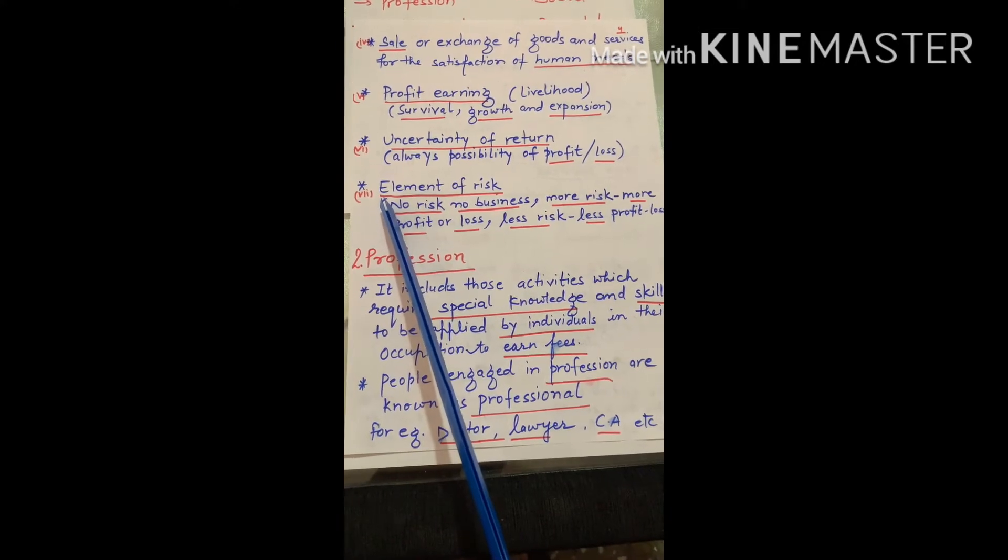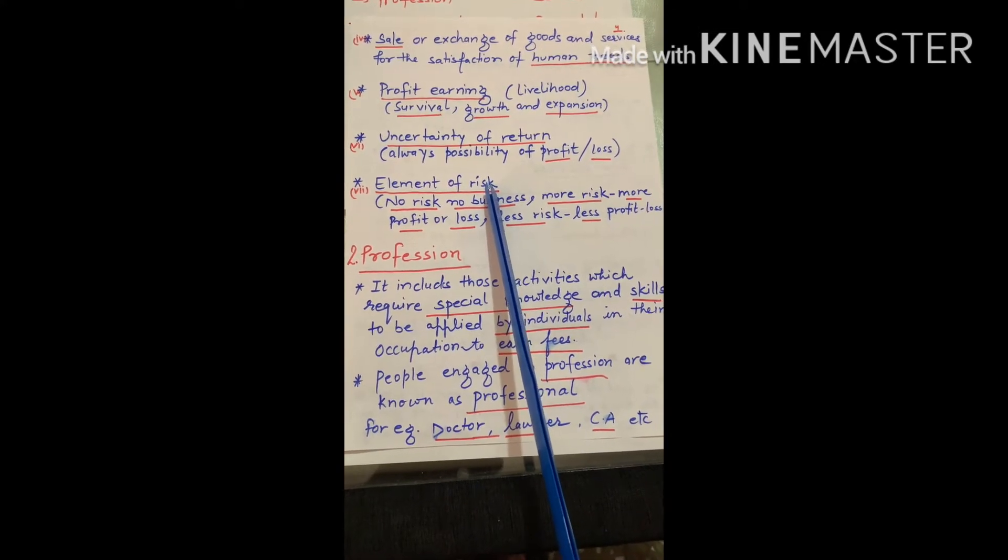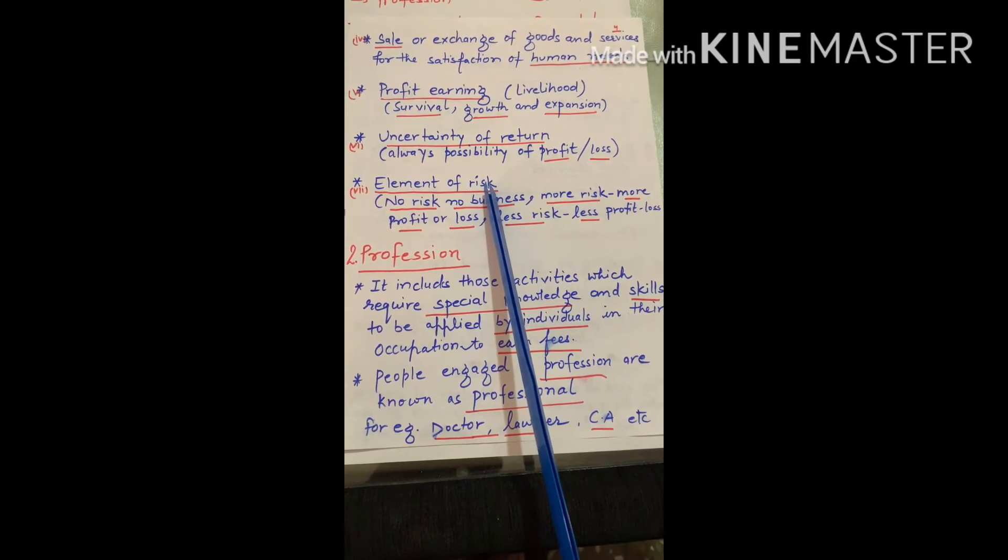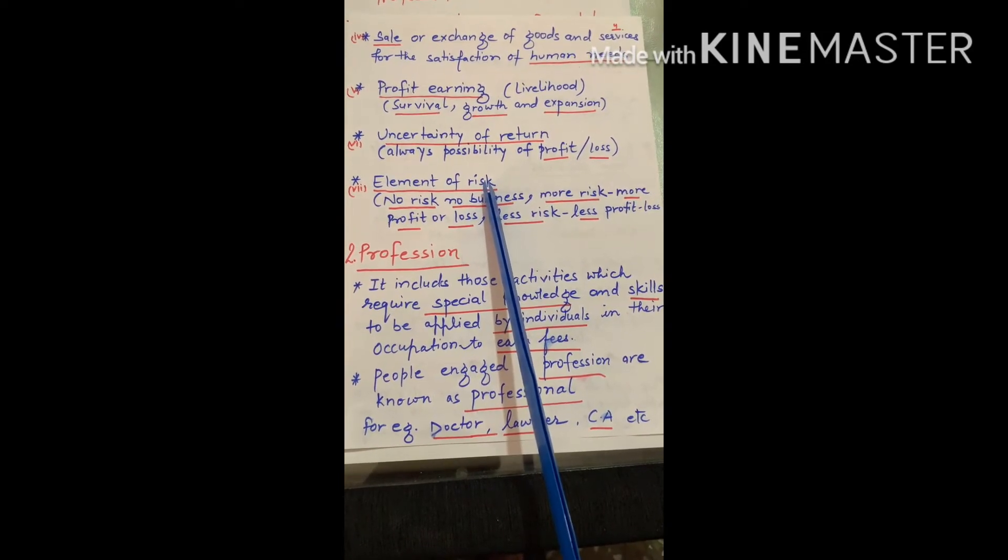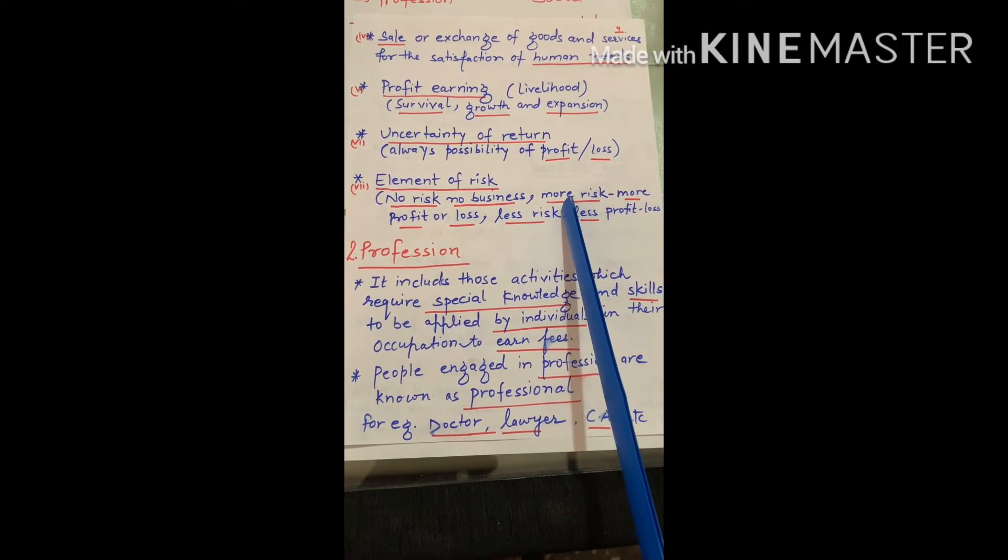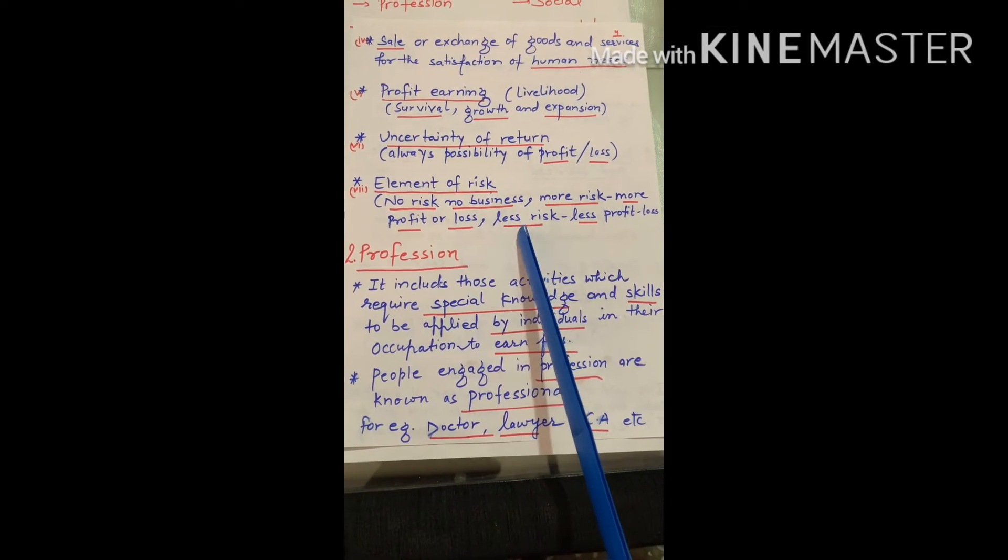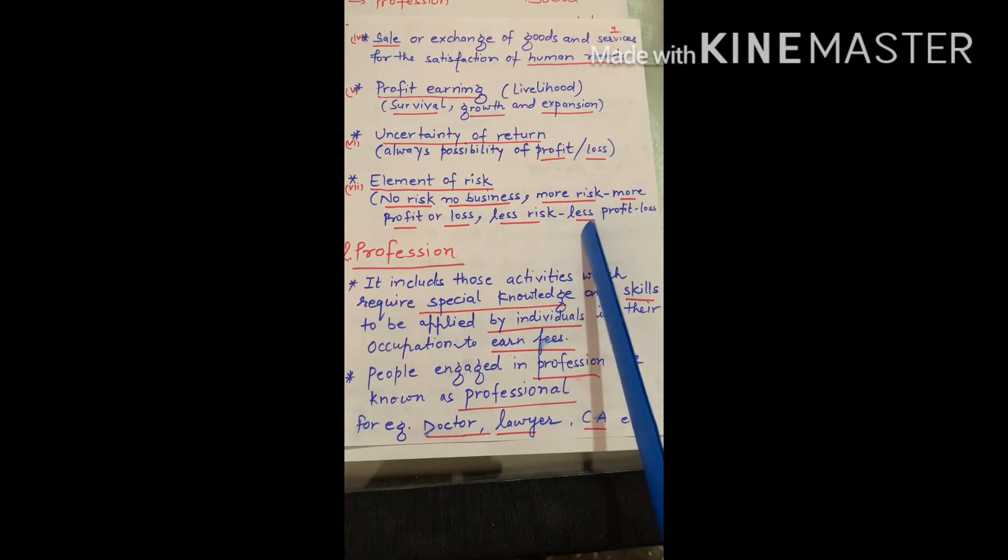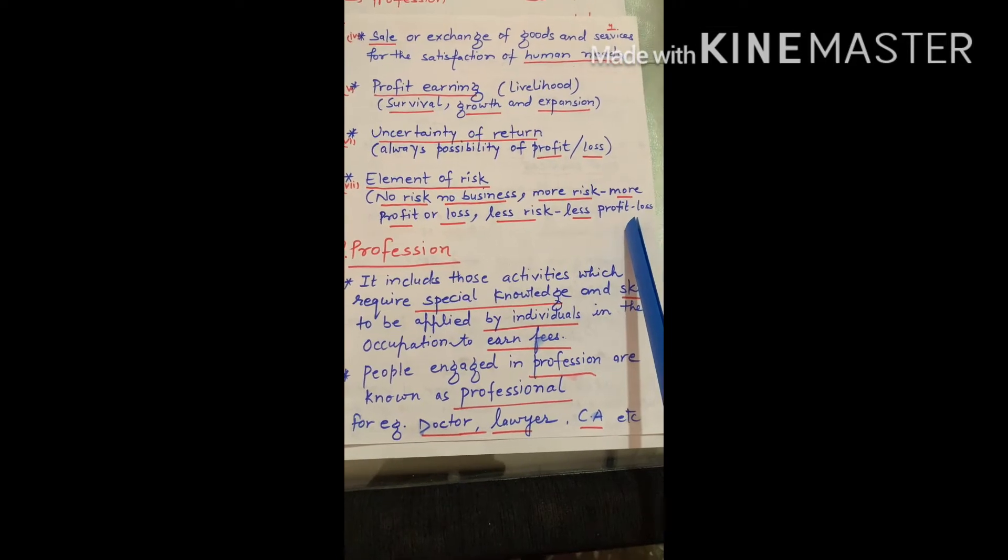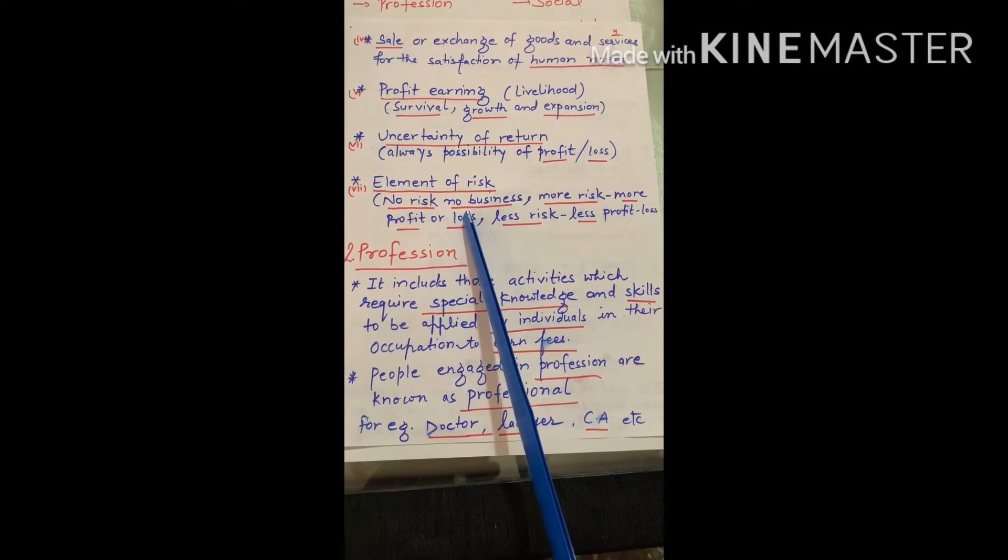Last characteristic is element of risk. Risk is associated with every business whether it is small or large. No risk, no business. If we will take more risk, there is chance of more profit or loss. If we will take less risk, there is chance of less profit or loss. So element of risk is also associated with the business.